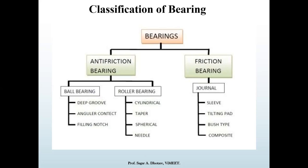In anti-friction bearings there is ball bearing and roller contact bearing. In ball bearings: deep groove ball bearing, angular contact ball bearing, and filling notch ball bearing. In rolling contact: cylindrical, taper, spherical, and needle. In general friction bearings there are four types: sleeve, tilting pad, bush type, and composite type. We will discuss anti-friction bearings in this lecture.